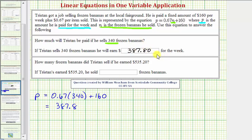The second question asks, how many frozen bananas did Tristan sell if he earns $535.20? Notice for this question, they're giving us his weekly pay P and asking us to find N. So we'll substitute 535.20 for P and solve for N.